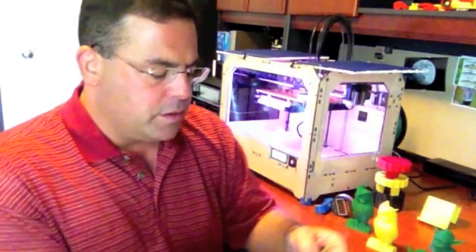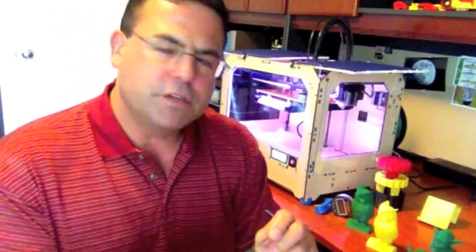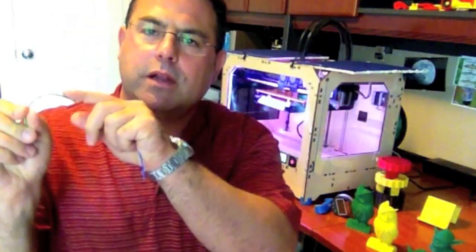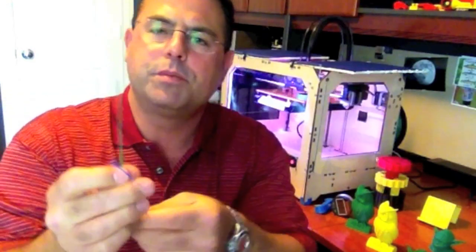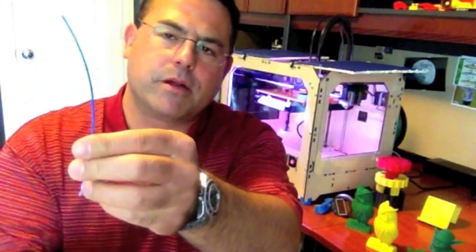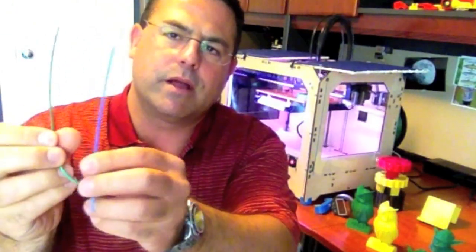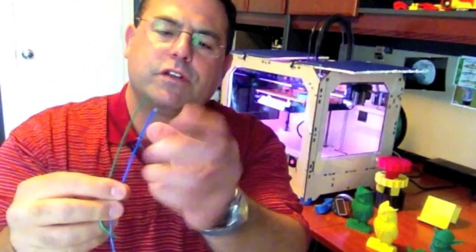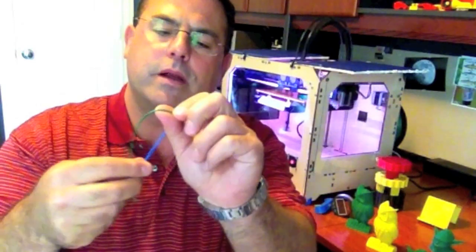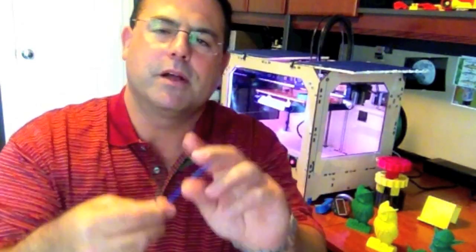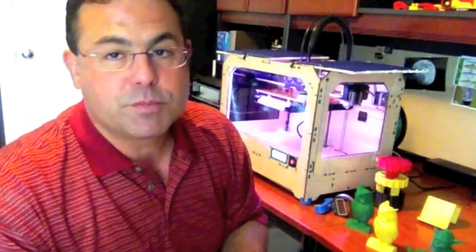I noticed that the Proto Paradigm filament seems a little different in character. It's like a little springier. Here's two pieces: the blue is MakerBot, the green here is Proto Paradigm. There's not much difference, but it does seem like the Proto Paradigm plastic is a little stiffer. Not by much. I'm getting some nice prints, and that's really what it's all about.